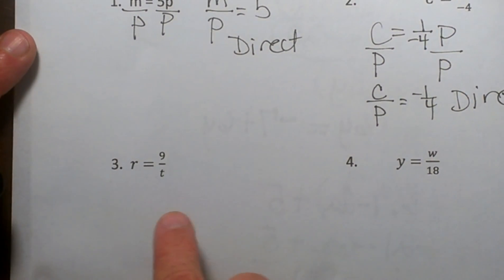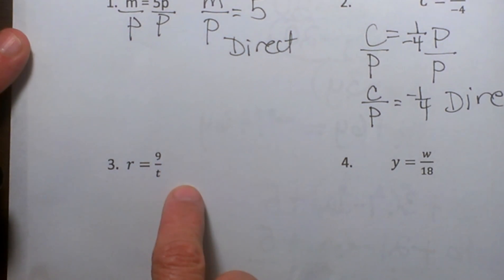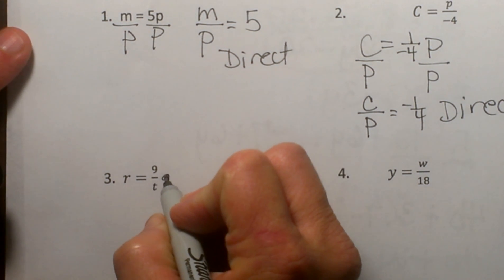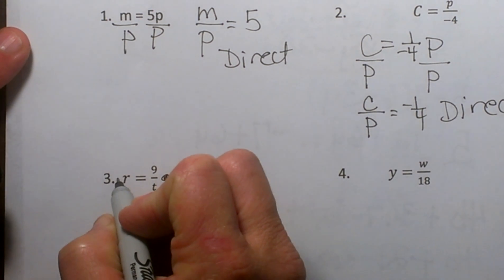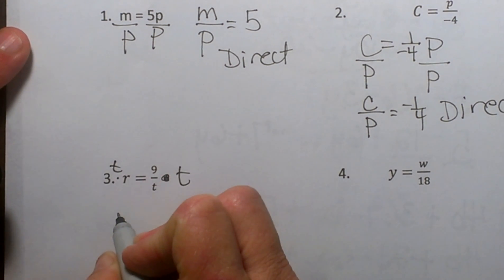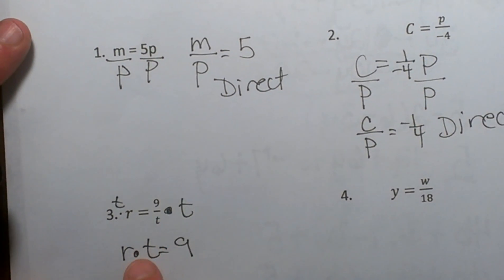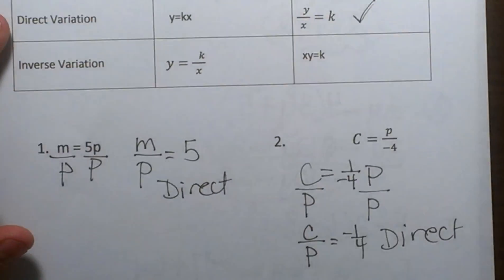Okay so let's look at this one. We have r equals 9 over t. To get the variables on the same side I'm going to multiply both sides by t. So I have r times t equals the constant 9. Now that I have the variables on both sides I can see I'm multiplying my two variables together.